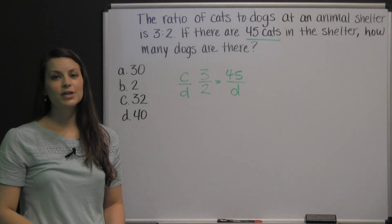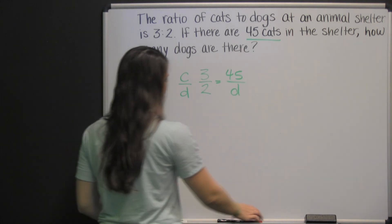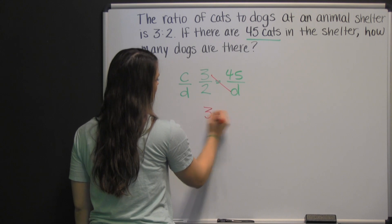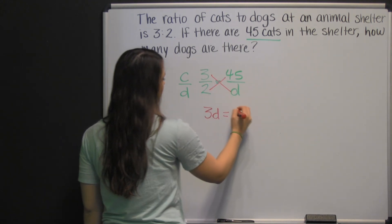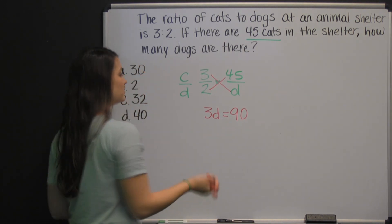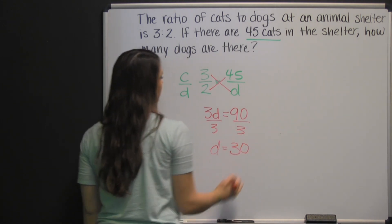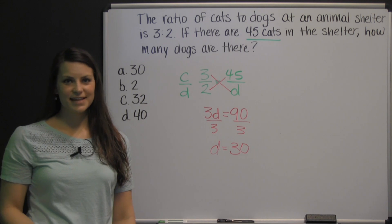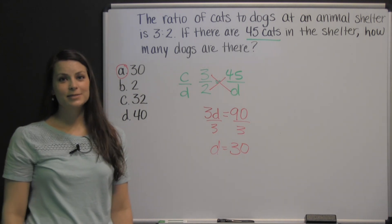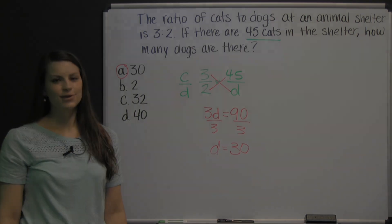You can solve proportions using cross products, or cross multiplication. Three times D is 3D, and that's equal to two times 45, or 90. Then, solve for D by dividing both sides by three. D is equal to 30. That means there are 30 dogs in the shelter. There you have an HSPT practice question for your HSPT test. Good luck!